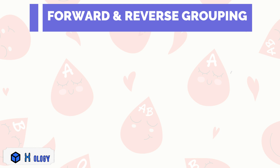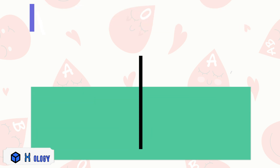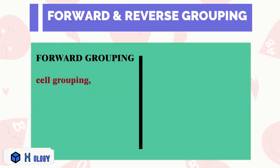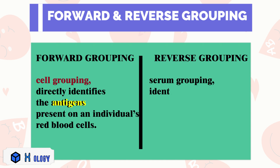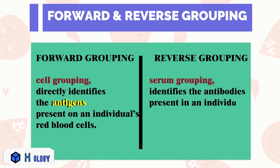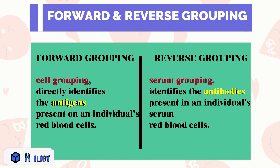Forward grouping, also known as cell grouping, directly identifies the antigens present on an individual's red blood cells. Reverse grouping, also known as serum grouping, identifies the antibodies present in an individual's serum, which are indicative of the antigens they lack on their red blood cells.